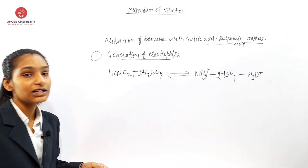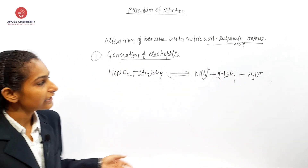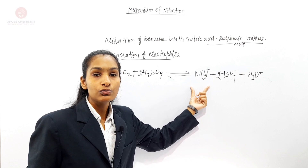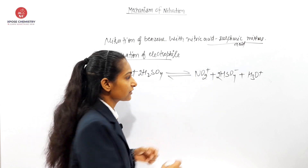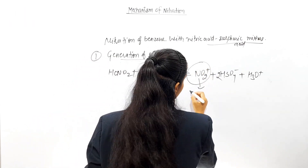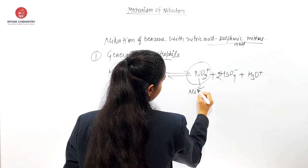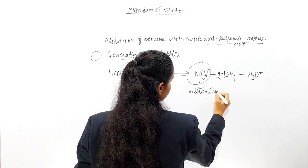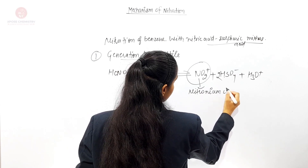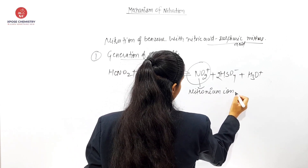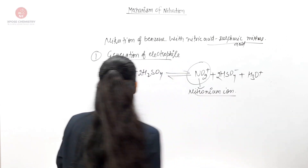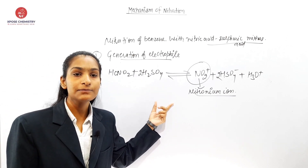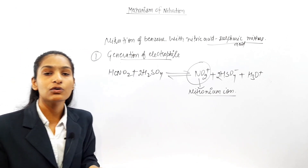The first step is the generation of the Electrophile — specifically the Nitronium ion. So the first step is: Generation of Electrophile.